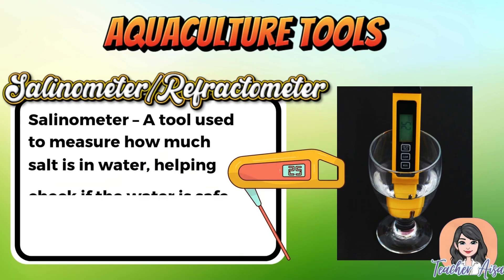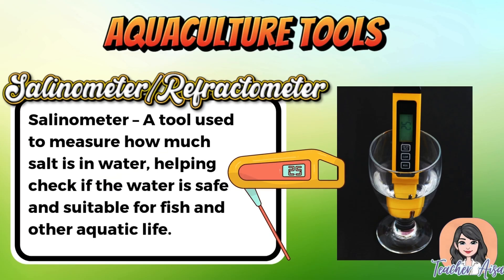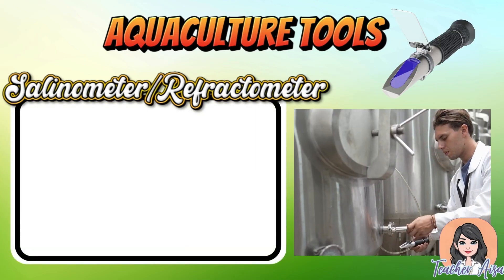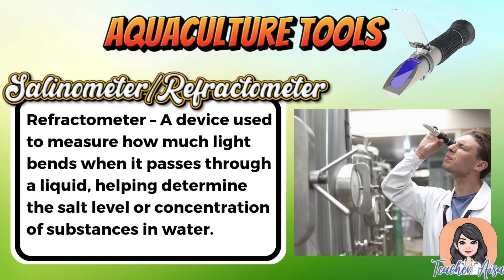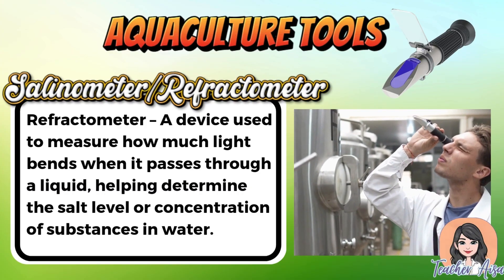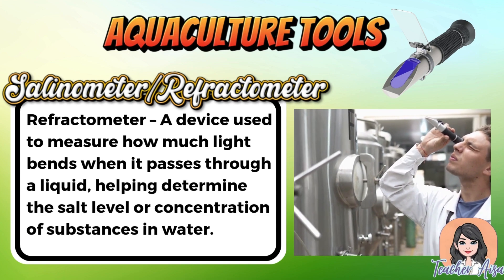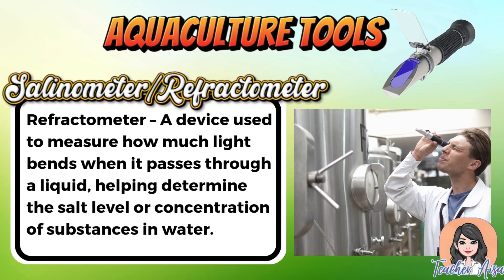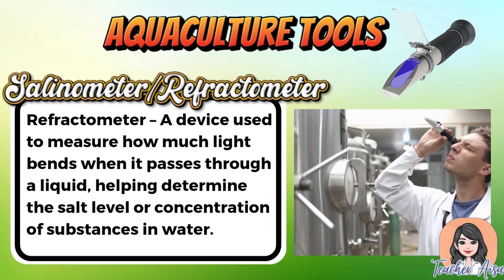The salinometer is a tool used to measure the amount of salt in water, helping determine if the water is safe and suitable for fish and other aquatic organisms to live and grow in. The refractometer is a useful tool that measures how much light bends as it passes through a liquid, which helps determine the salt level or concentration of substances in water — important in aquaculture and food processing.